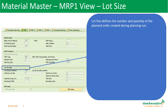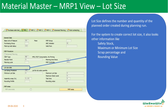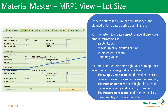Now we will see what is the lot size. Lot size is used to define what the number of proposals — like a planned order or purchase requisitions — to be created, and how much quantity to be created for each proposal. For the system to create the lot size properly, it looks at other information like how much safety stock is maintained, what is the maximum and minimum lot size, what is the scrap percentage defined, and what are the rounding values.